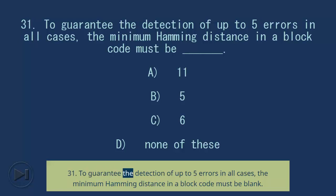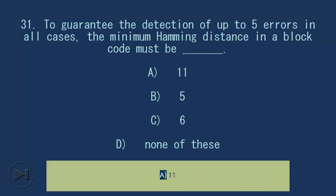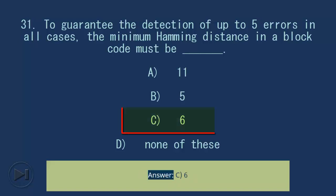Question 31: To guarantee the detection of up to five errors in all cases, the minimum Hamming distance in a block code must be blank. A) 11, B) 5, C) 6, D) none of these. Answer: C, 6.